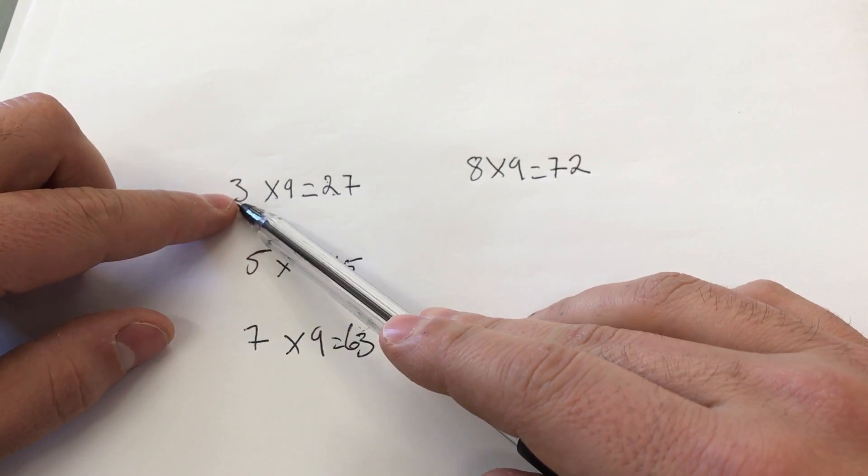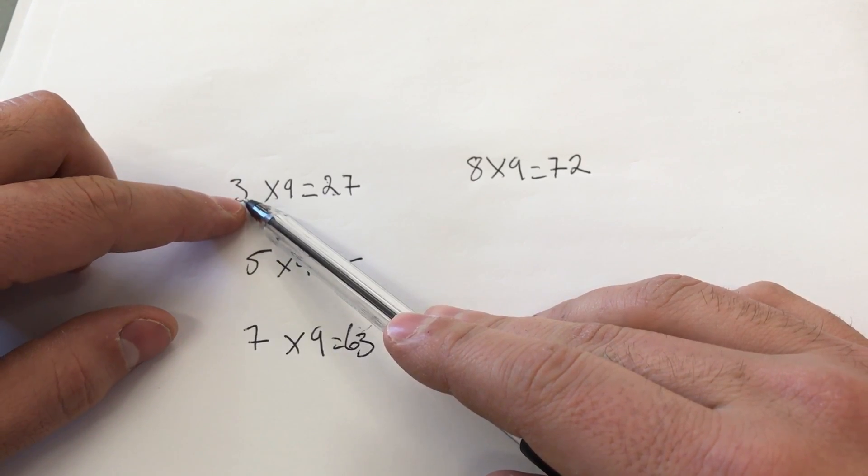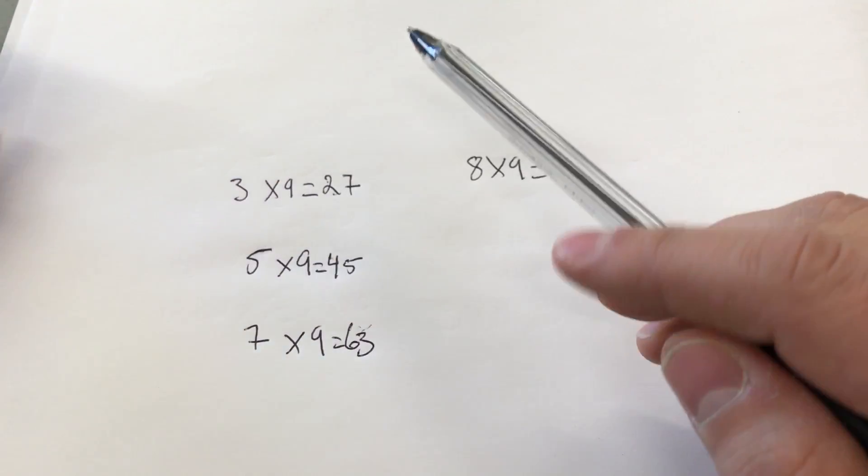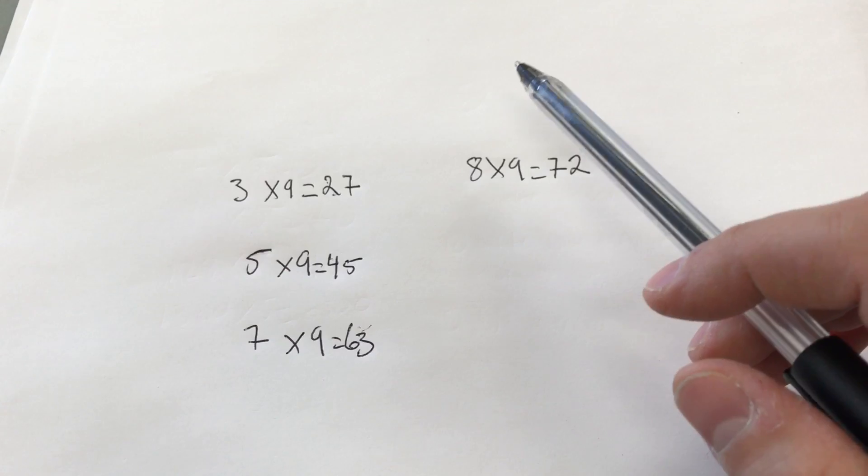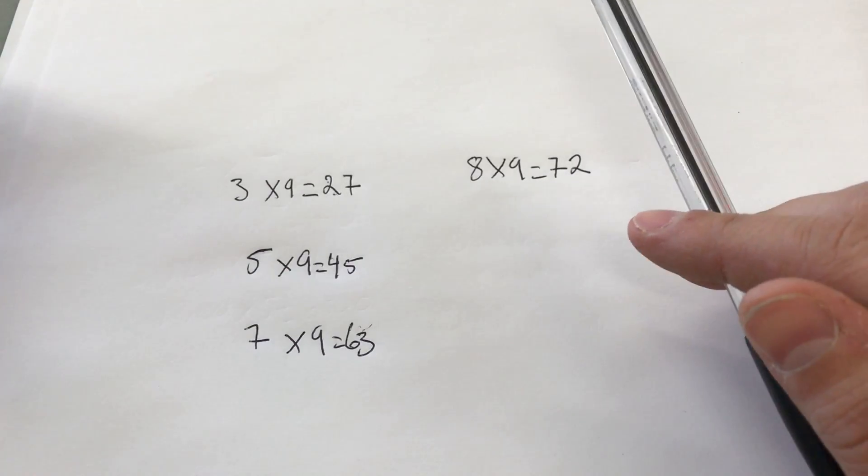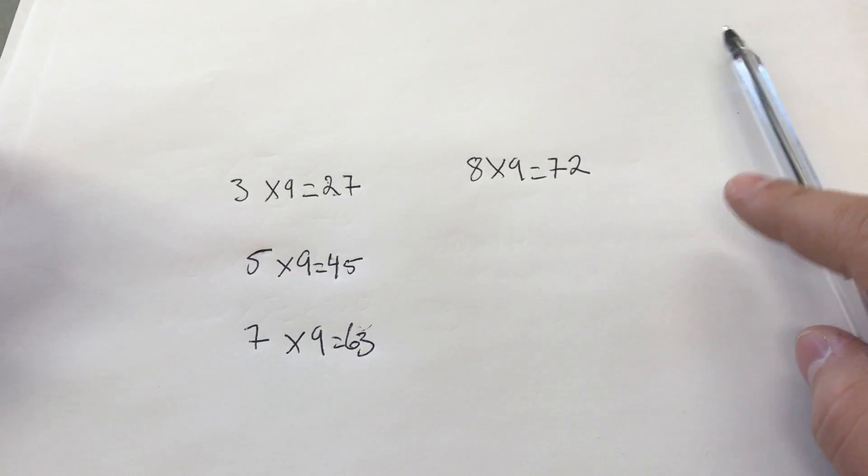So basically, you're working with the non-9 number first, then you're working with the 9 number after. It's literally that simple. That's an easy way to multiply by 9. It's an easy math multiplication trick.